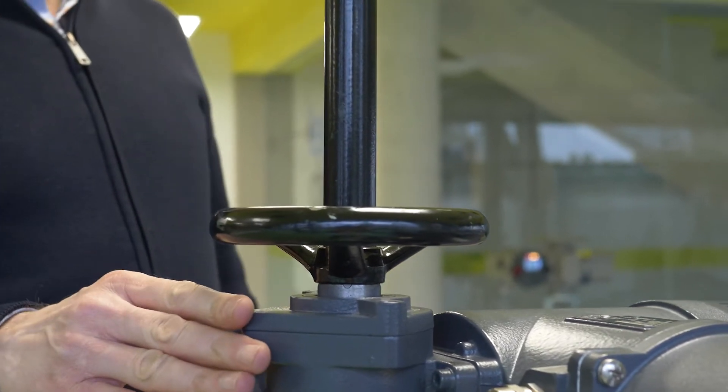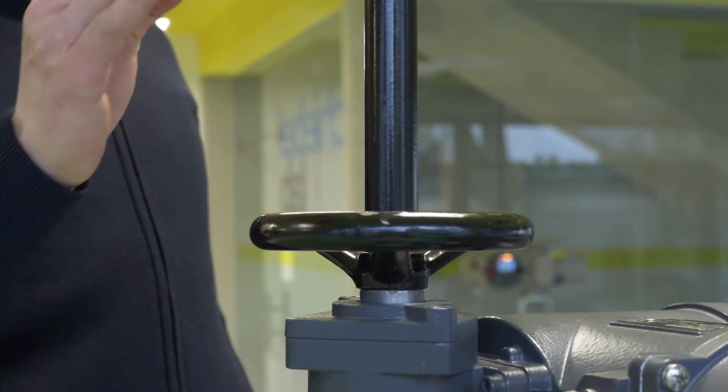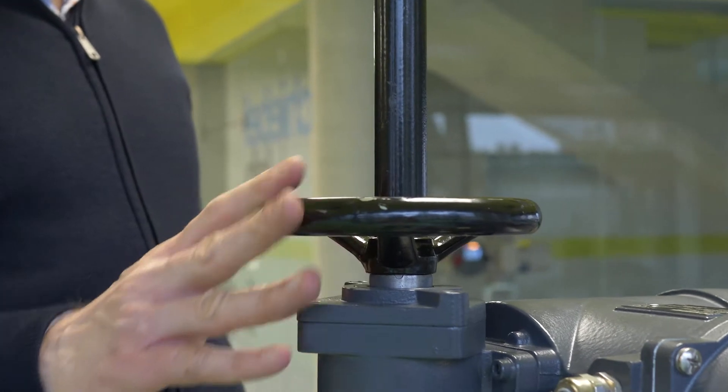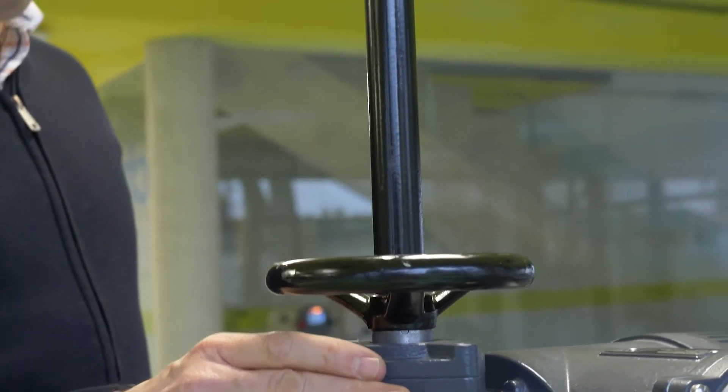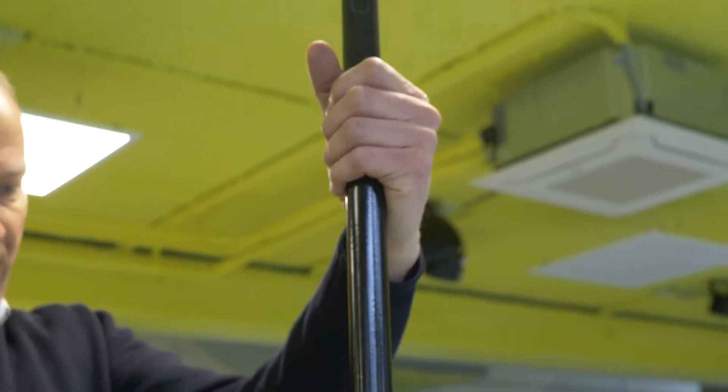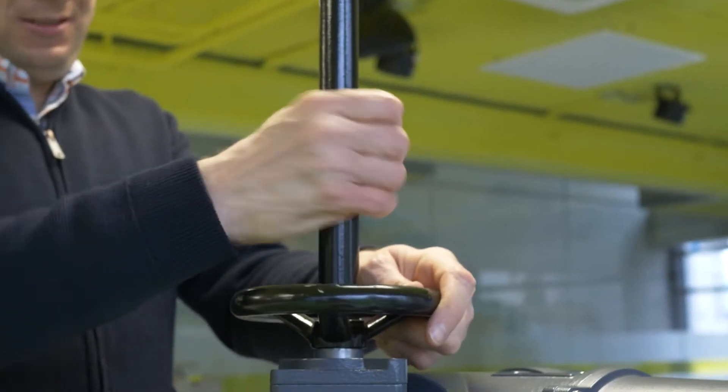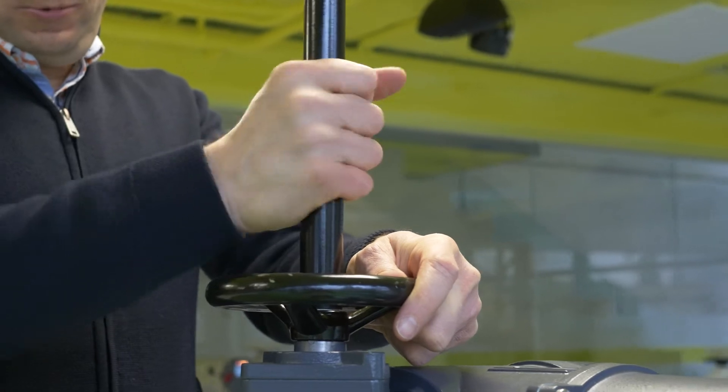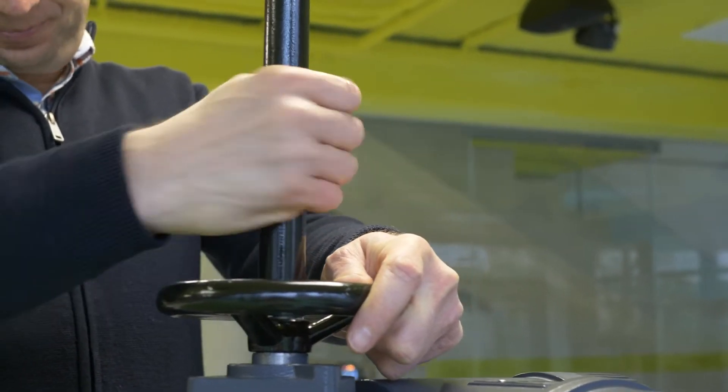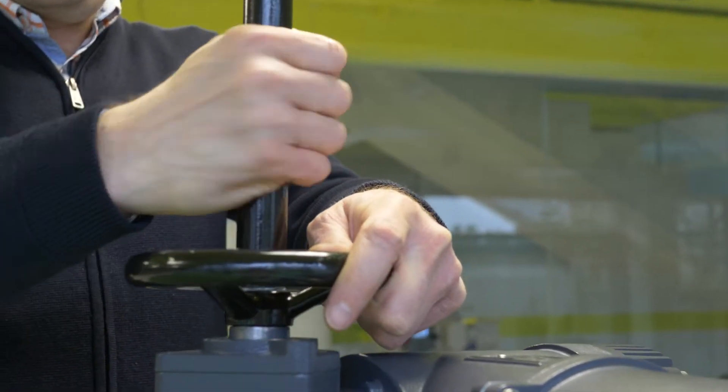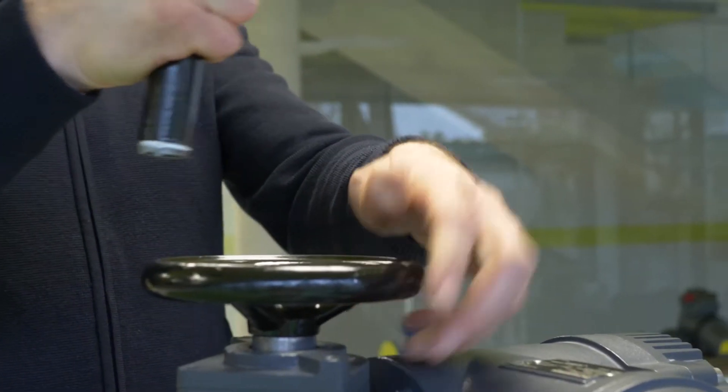We see here the actuator has a stem cover tube, and to change the handwheel group we have to loosen this stem cover tube in the first step.